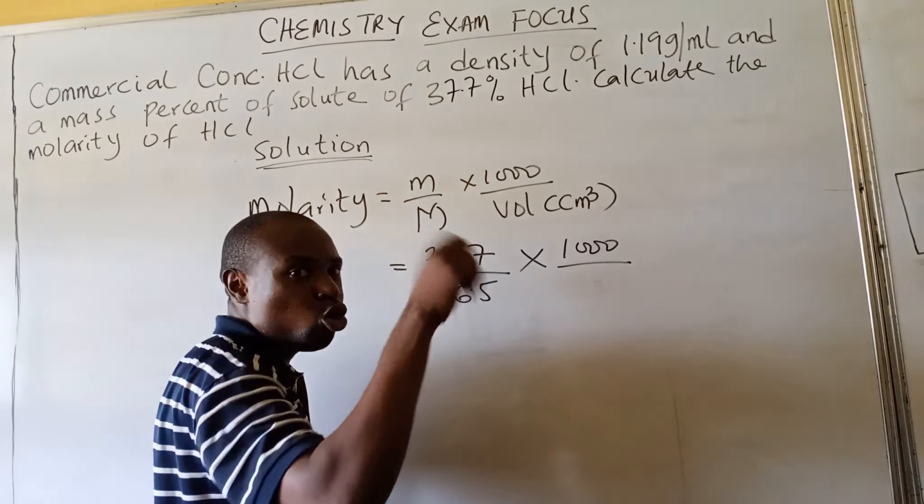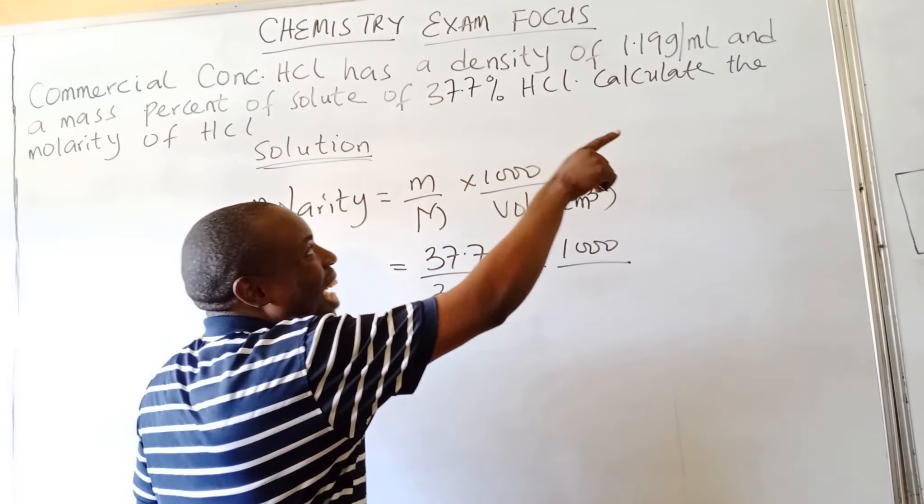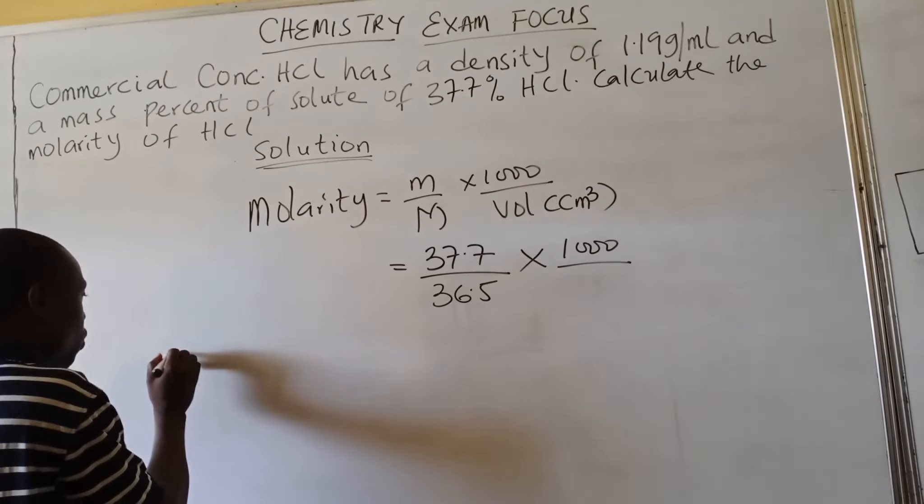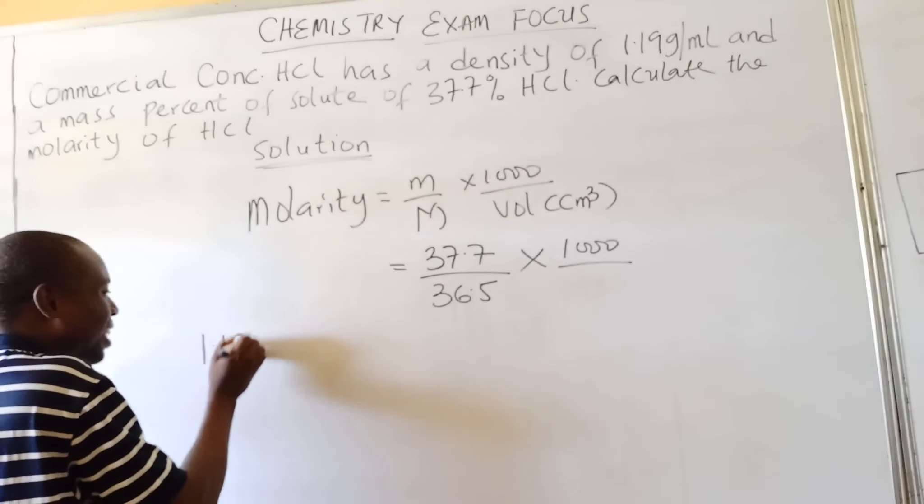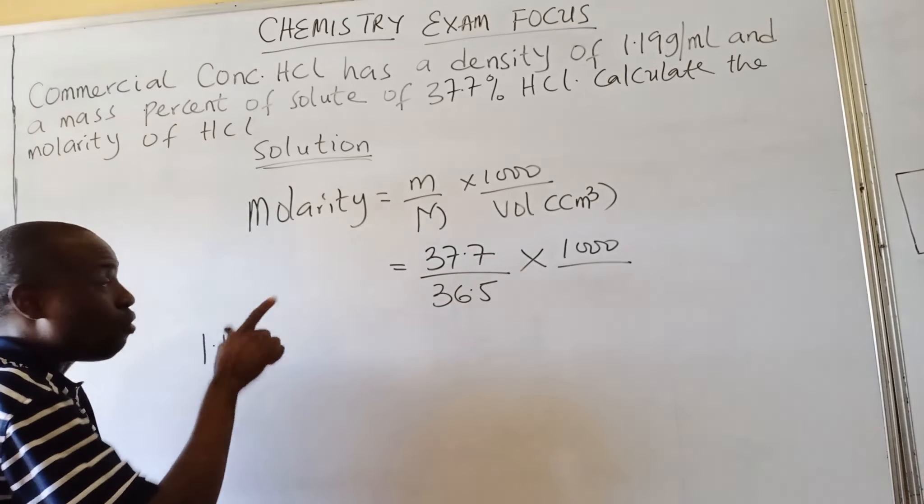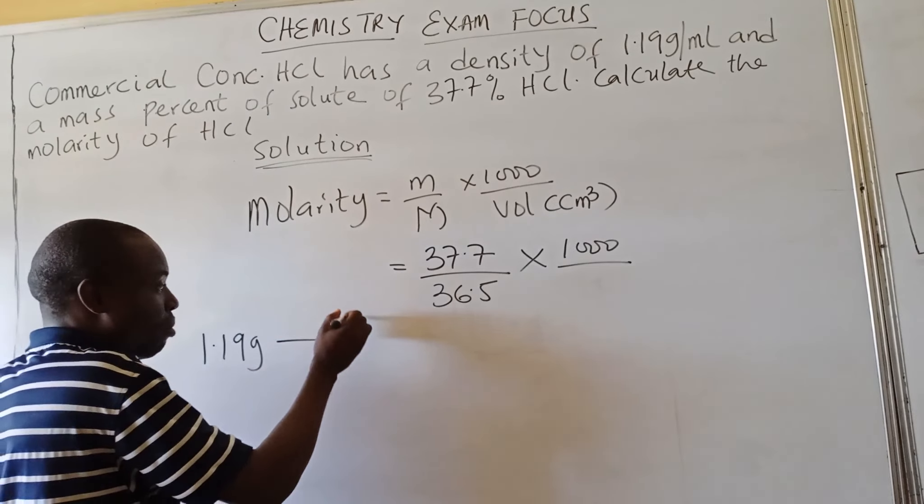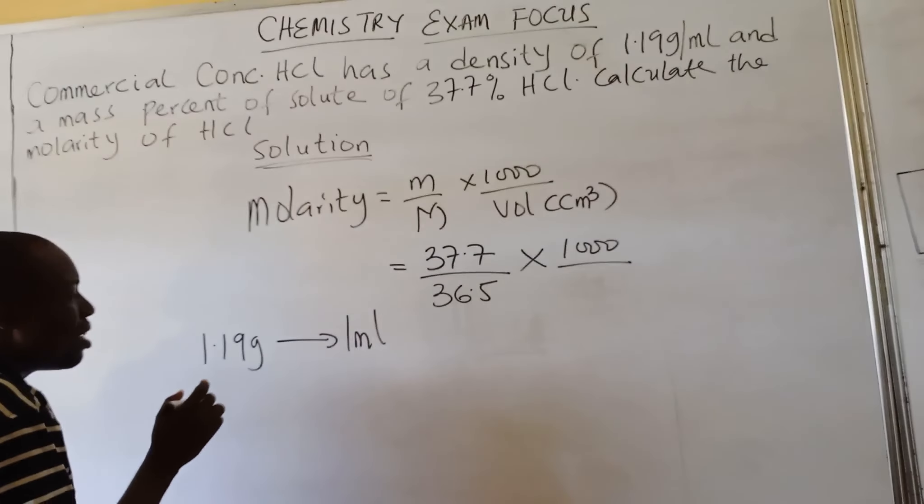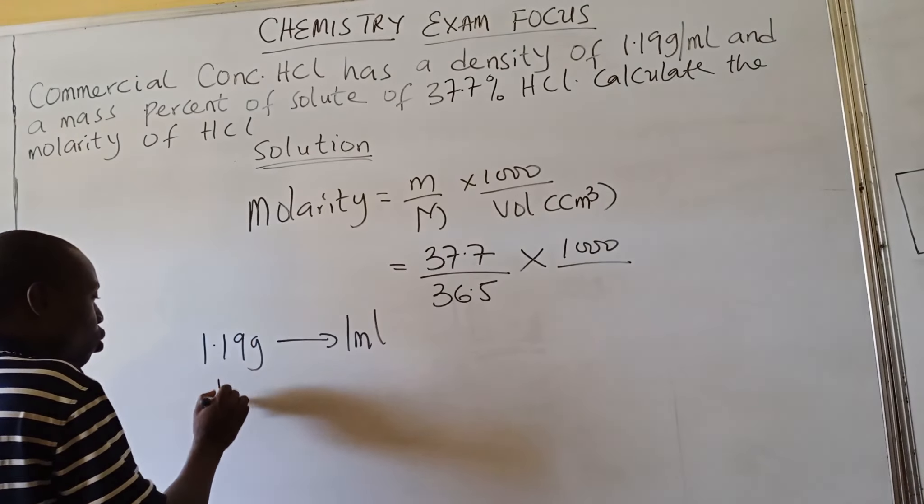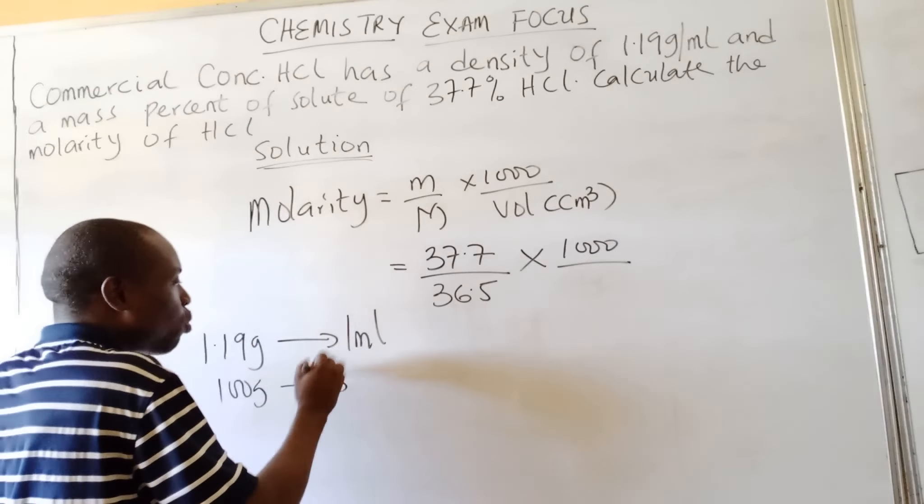is 1.19 grams per mL. So having 1.19 grams of the solution gives us 1 mL. Now since we have 100 grams of solution, what will be the volume in mL? So x equals 100 divided by 1.19, which gives